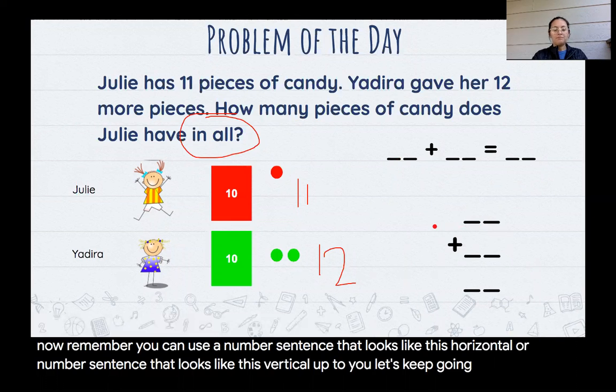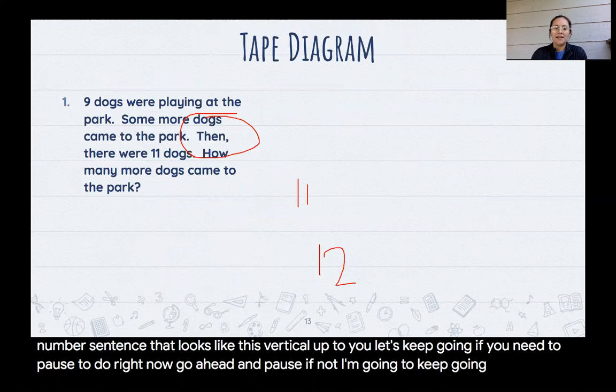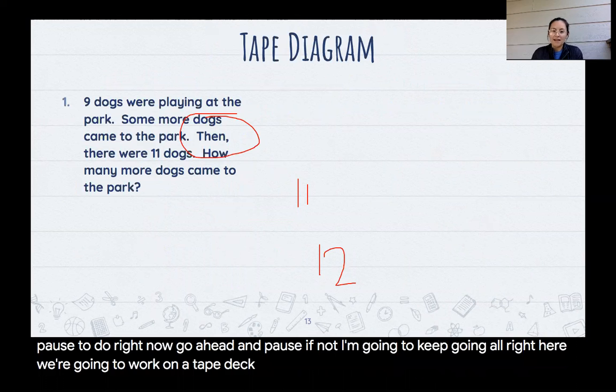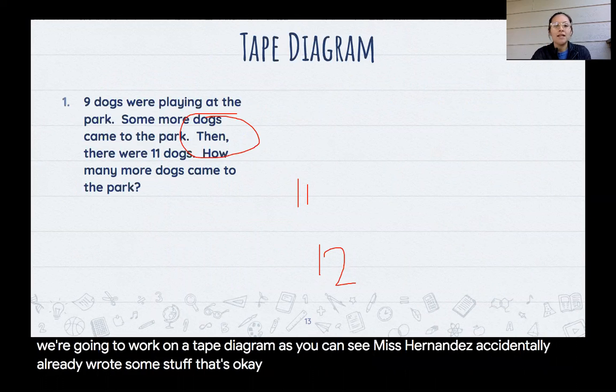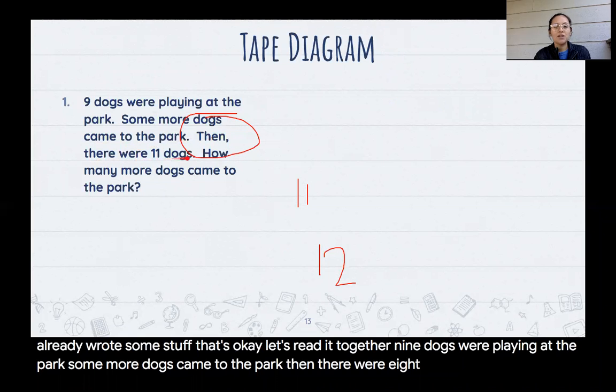If you need a pause to do right now, go ahead and pause. If not, I'm going to keep going. All right, here we're going to work on a tape diagram. As you can see, Ms. Hernandez accidentally already wrote some stuff. That's okay. Let's read it together. Nine dogs were playing at the park. Some more dogs came to the park. Then there were 11 dogs. Now, how many more dogs came to the park?